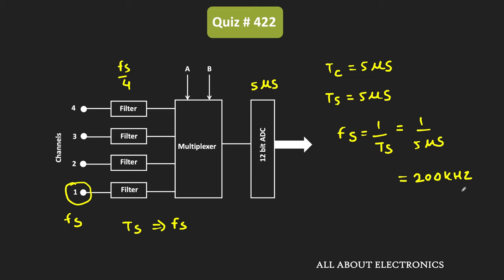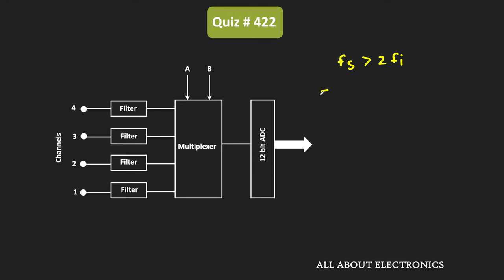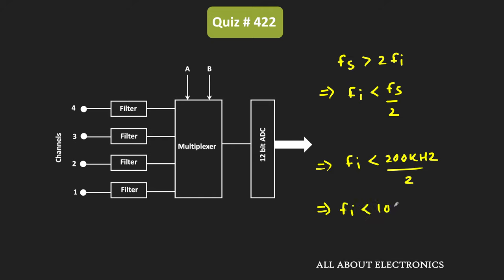At this rate, the input signal at channel 1 is being sampled. If Fi is the input signal frequency, then to avoid aliasing, the input signal should be sampled at the Nyquist rate — meaning the sampling frequency Fs should be at least 2 times the input signal frequency. For the given sampling frequency of 200 kHz, the input signal frequency should be less than Fs/2 = 200 kHz/2 = 100 kHz.